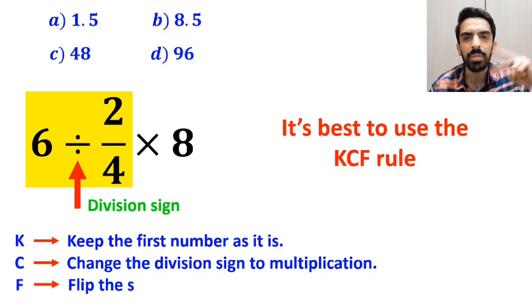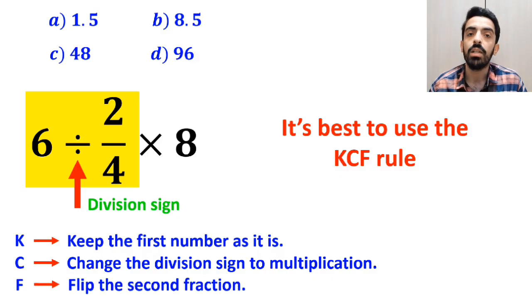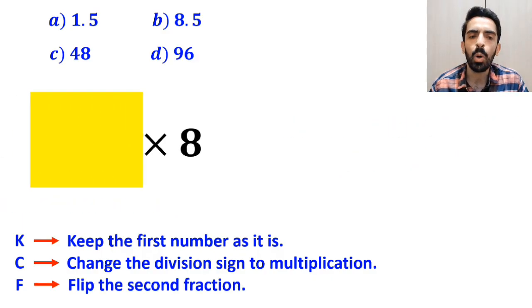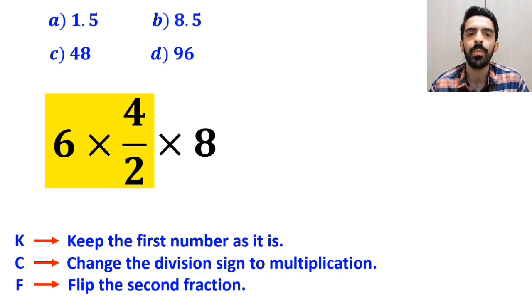and F stands for flip the second fraction. So, we remove the highlighted part and replace it with 6 multiplied by 4 over 2.